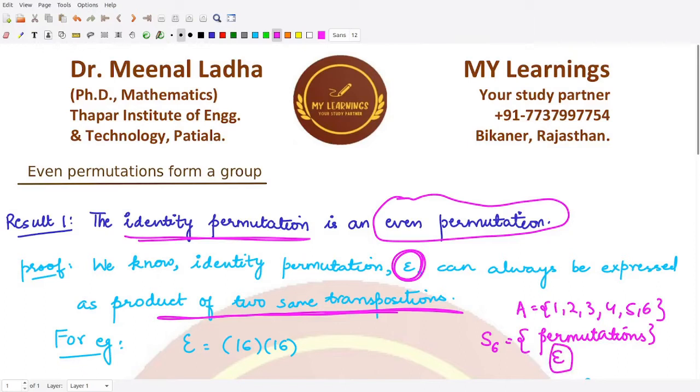Within this we would also have the identity permutation. The identity permutation will send 1 to 1, 2 to 2, 3 to 3, 4 to 4, 5 to 5, and 6 to 6. We are representing this ε as product - we can represent it by (1,6)(1,6). Let's see if this represents the identity permutation.